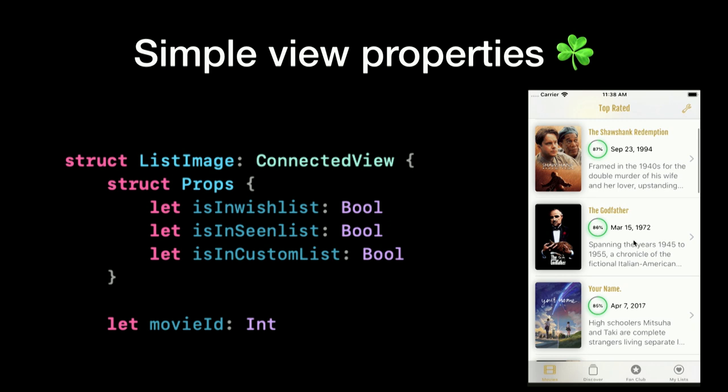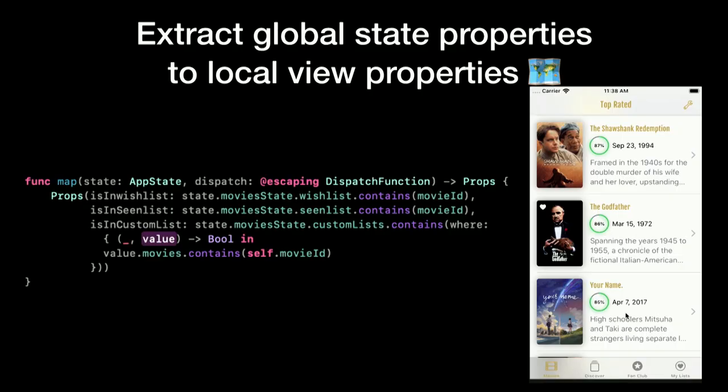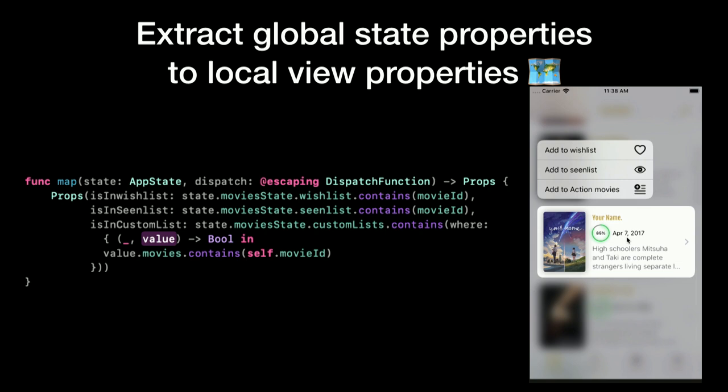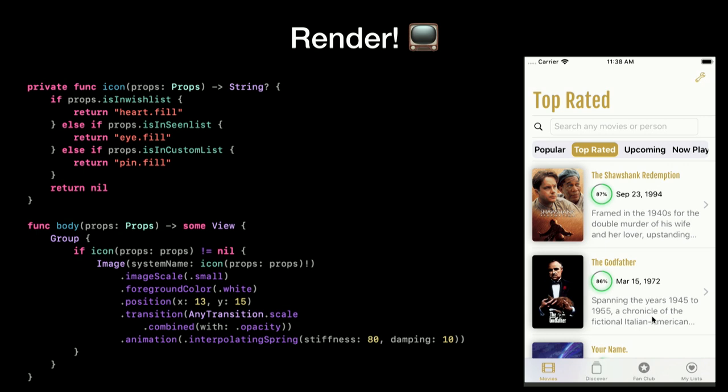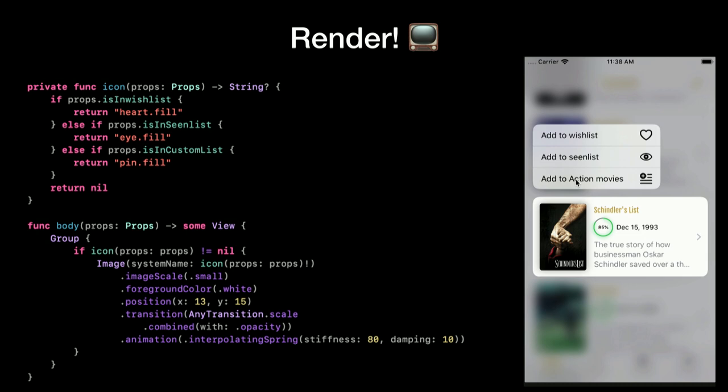We define props. We need to know only three Boolean values: whether it's in a wish list, seen list, or any custom list. We need the movie ID to retrieve it from the state. Then, because we are in a connected view, it will call a function called mapStateToProps — a function that will allow you to extract your global state properties and return your local view properties. And then finally it will call the body function with those props, so you will have access to your props. I return an icon as an image with a transition and some animation. That's all the code I need to display my little icon that reflects the state of the movie in my global RedX store.